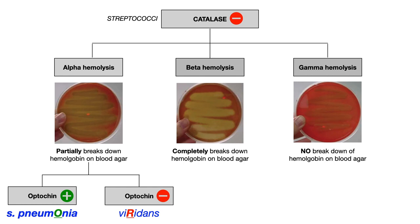The previous video, if you're watching in order, introduced you to streptococcus pneumoniae, which is an alpha-hemolytic bacterial pathogen that's optochin-sensitive. In today's video, we'll talk about the strep viridans family, which follows the same exact flowchart, but is actually optochin-resistant.